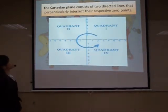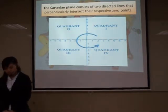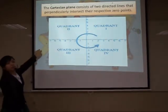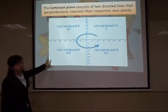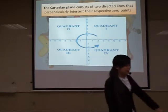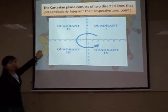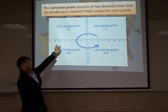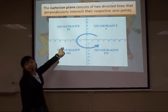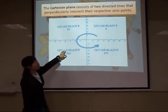The Cartesian plane consists of two directed lines that perpendicularly intersect at the respective zero point. This is an example of a Cartesian plane. As you can see, it is two lines that intersect. You might ask what are perpendicular lines — these are lines that form a T-shape and have right angles, which are angles that measure 90 degrees.